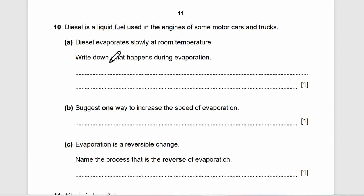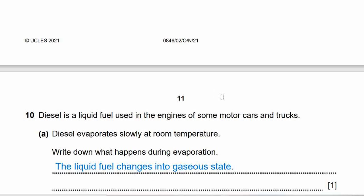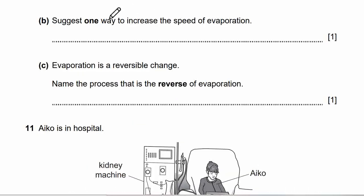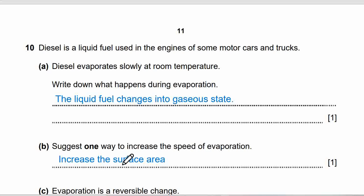Number 10: diesel is a liquid fuel used in engines of some motor cars and trucks. Diesel evaporates slowly at room temperature. Question 10A: write down what happens during evaporation — the liquid fuel changes into a gaseous state. Question 10B: suggest one way to increase the speed of evaporation — we can increase the surface area or increase the temperature; both will increase the speed of evaporation. The answer may vary.